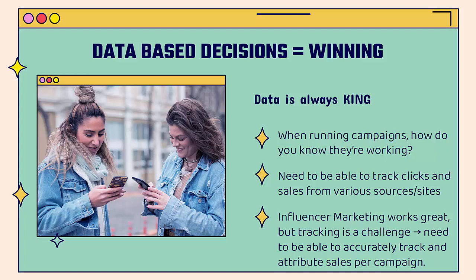This is very common when it comes to influencer marketing. There's no doubt that influencers work great — they generate sales, they generate clicks, they generate the type of customers that we want. But how do we track them? We need to be able to accurately track and attribute sales per influencer over the course of the campaign. We want to know: is this influencer working? Is it worth our time and money to work with this influencer again? What are the results?